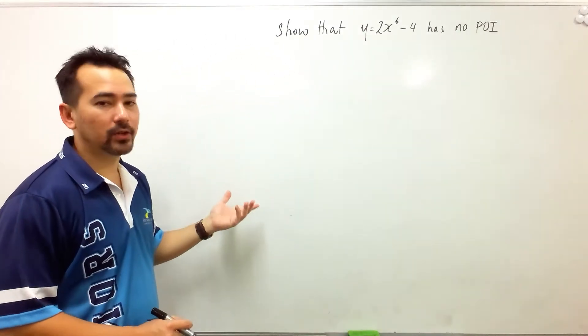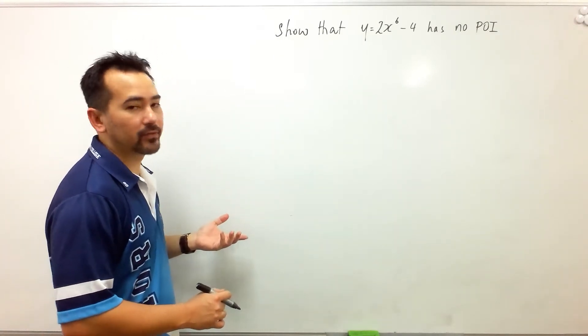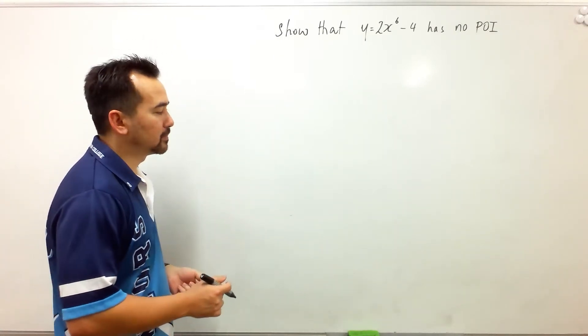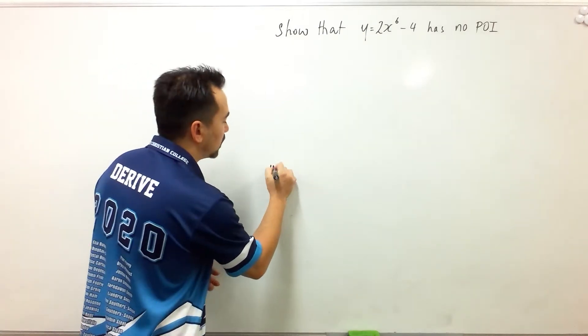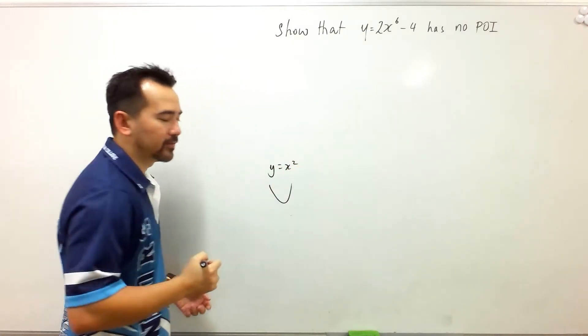So this is a polynomial, it's degree 6, and yet it has no point of inflection, but that will happen sometimes. Like a quadratic will have no point of inflection.